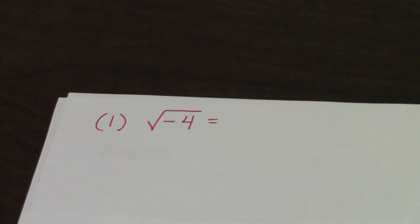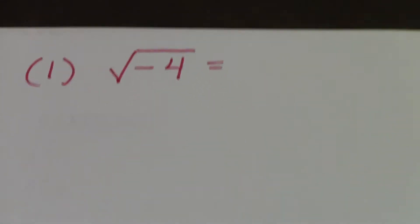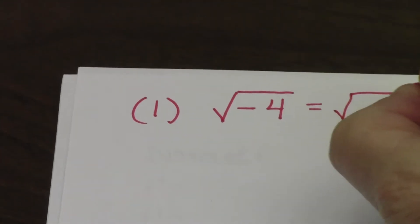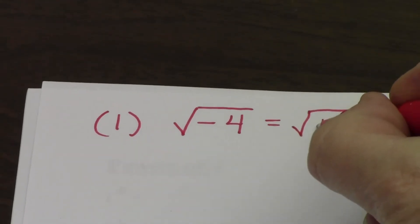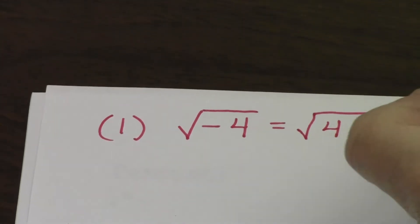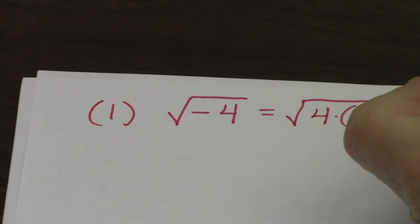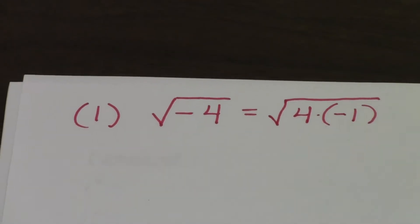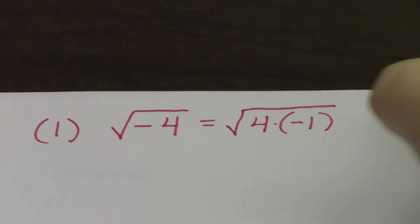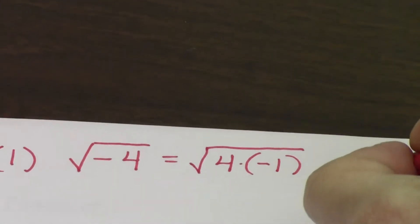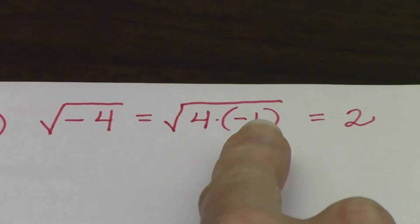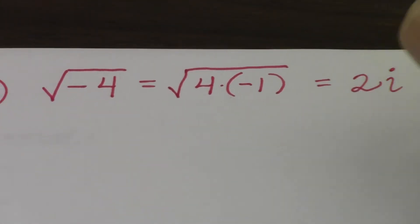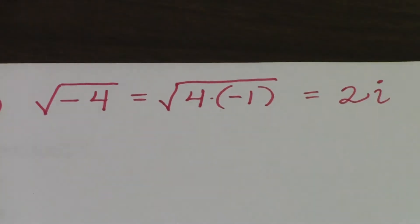The first one we'll look at is the square root of negative four. It's a pretty simple square root, and we'll separate it into two parts: the square root of four multiplied by the square root of negative one. The square root of four is two, and the square root of negative one is i. So the square root of negative four equals 2i.